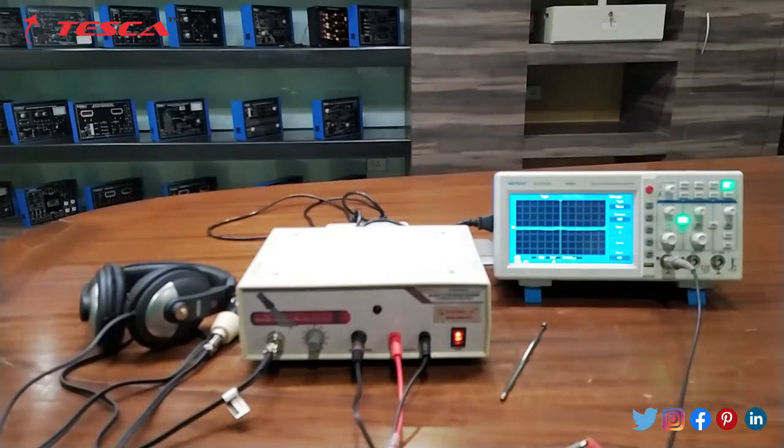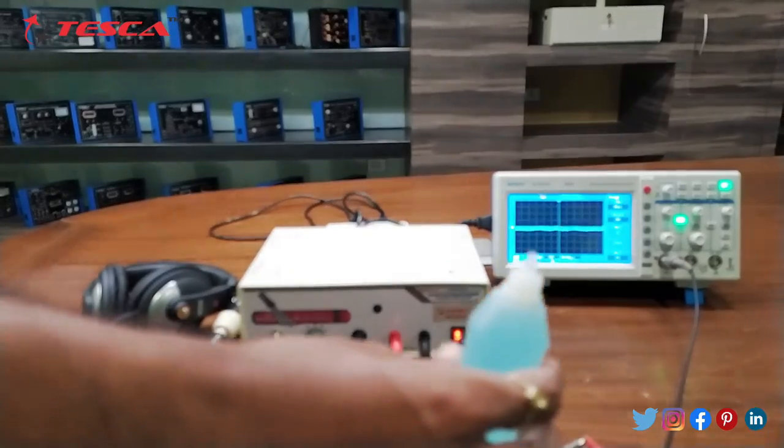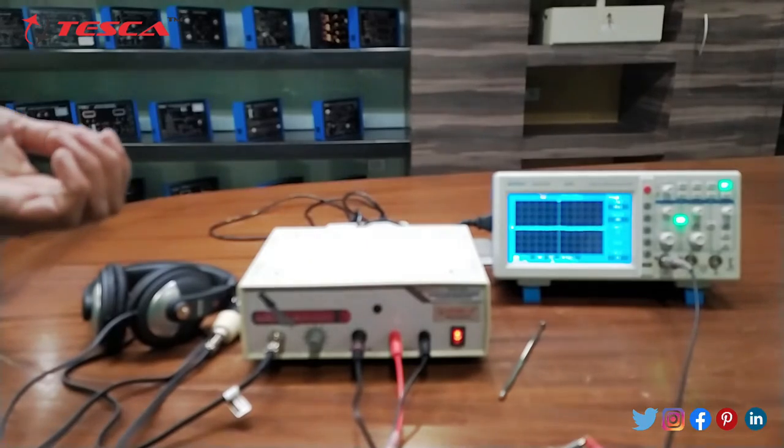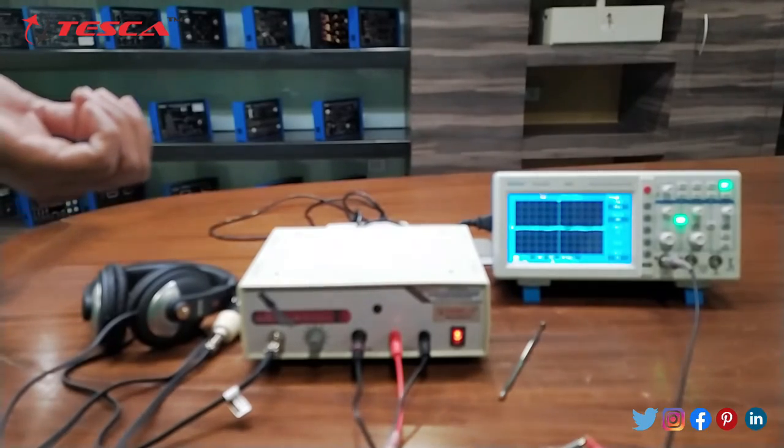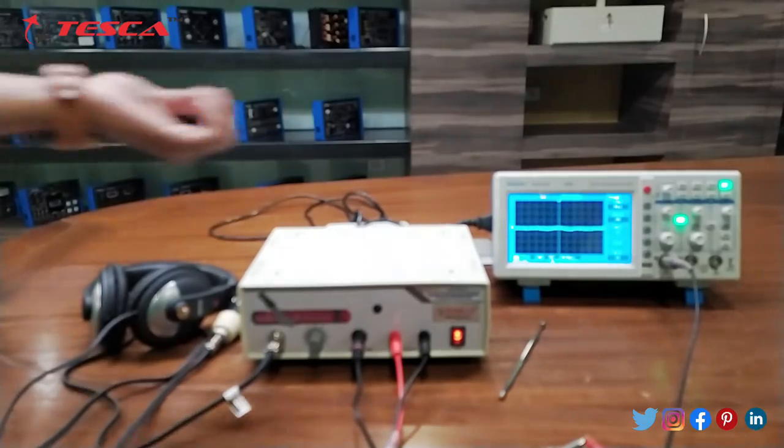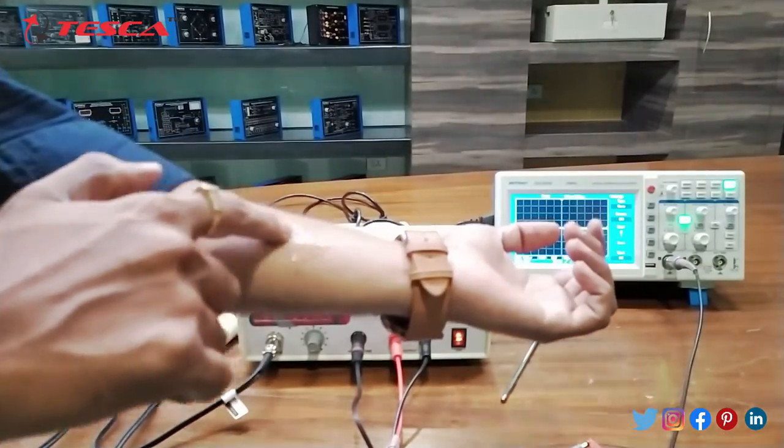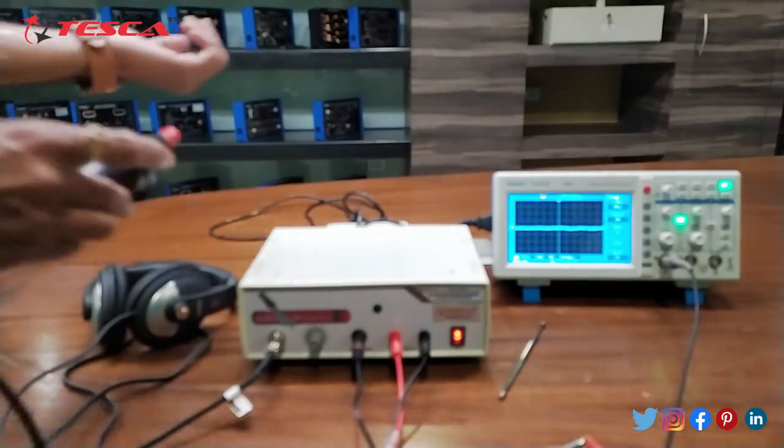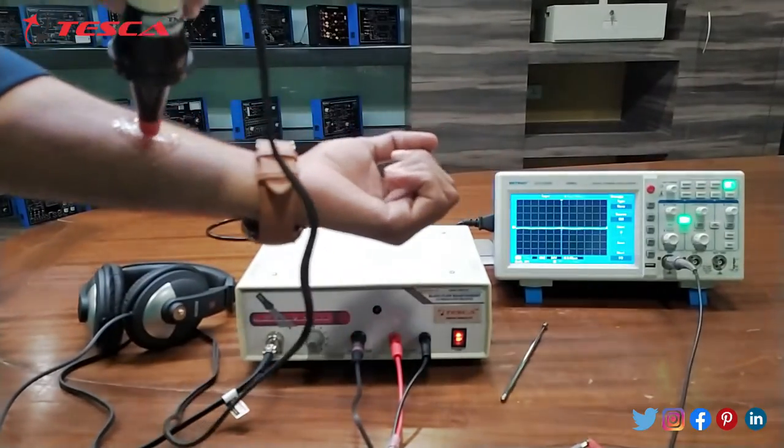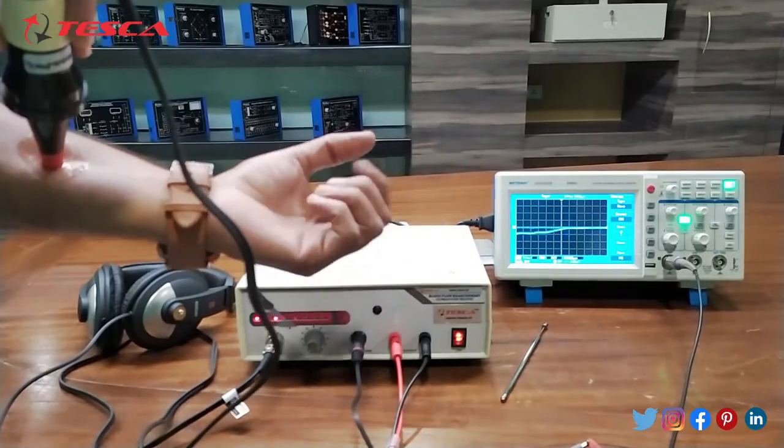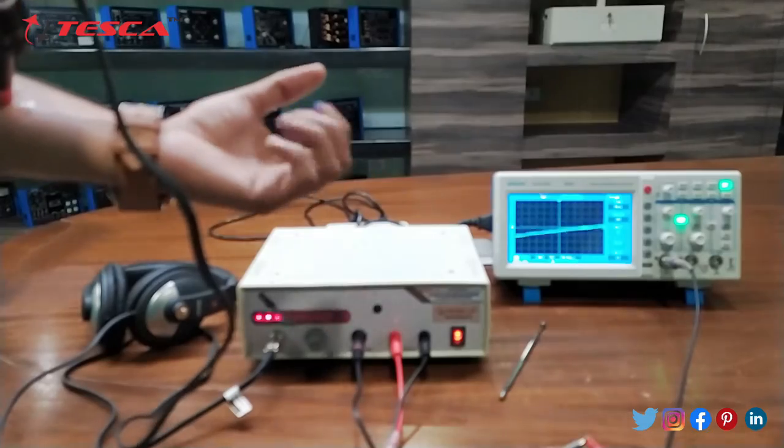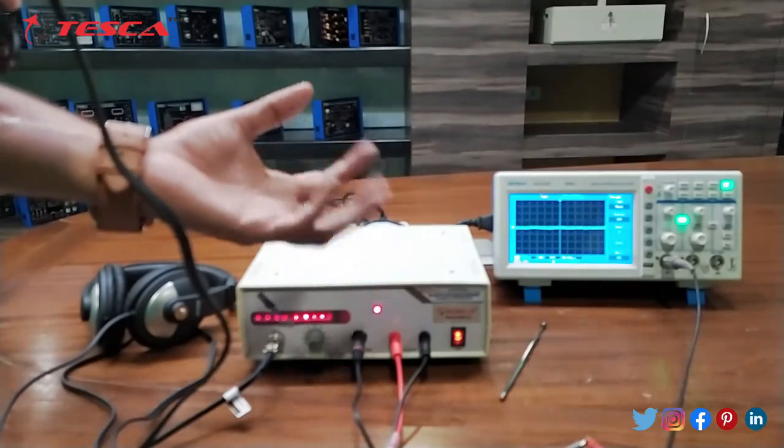Now we will measure the blood flow. For that we will apply this gel on our hand. And like this. Then we will take the transducer and we will put it on our hand.